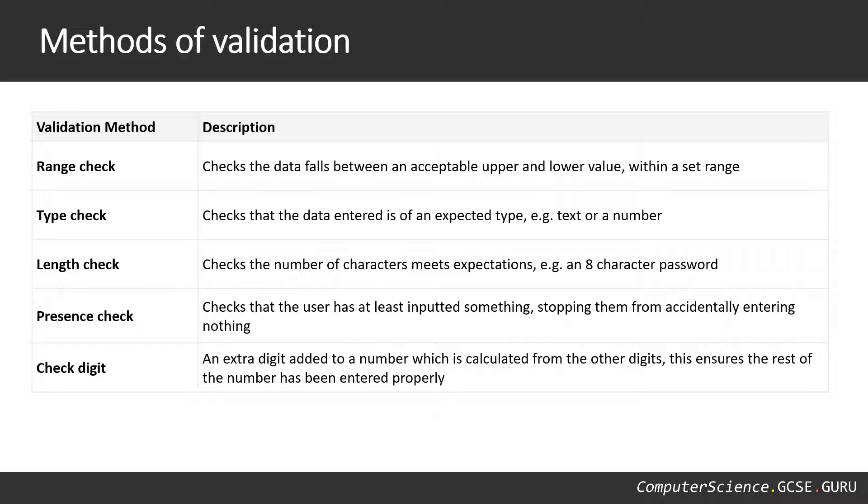And finally we've got check digits. A check digit, as you may know, is an extra digit added to the end of a number and it's calculated from the numbers before it, so it's very unlikely that you could have entered the digits incorrectly and have came up with the same check digit.